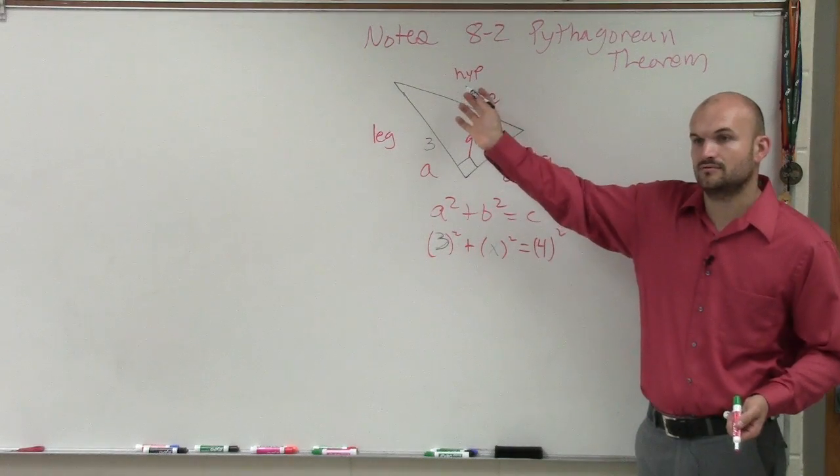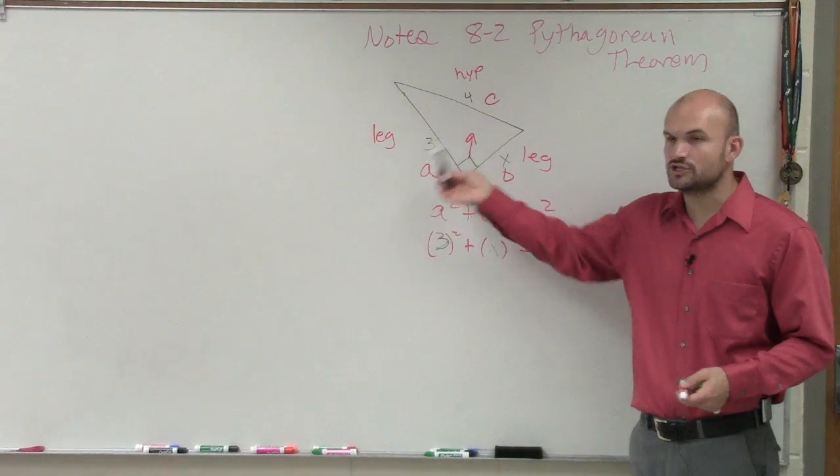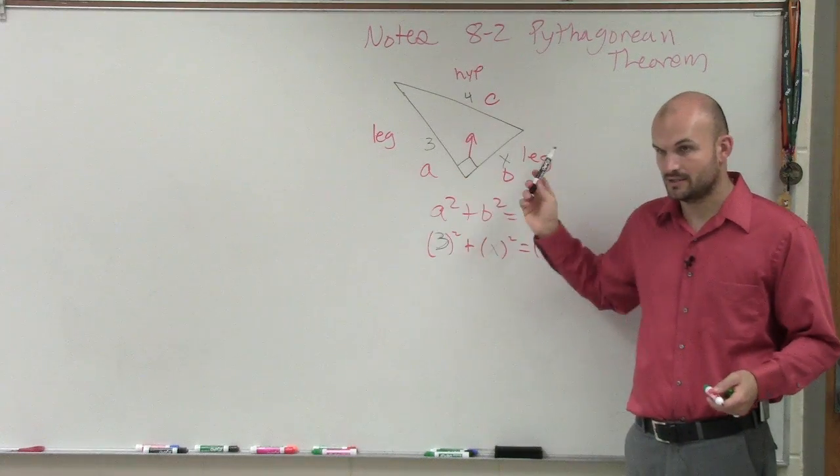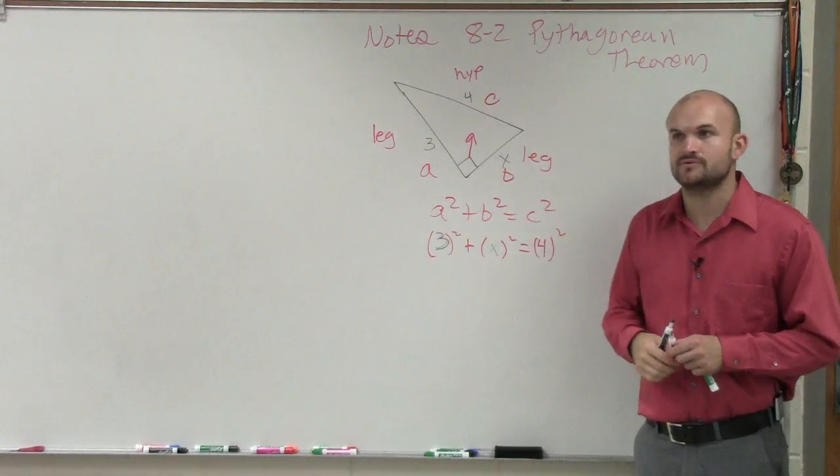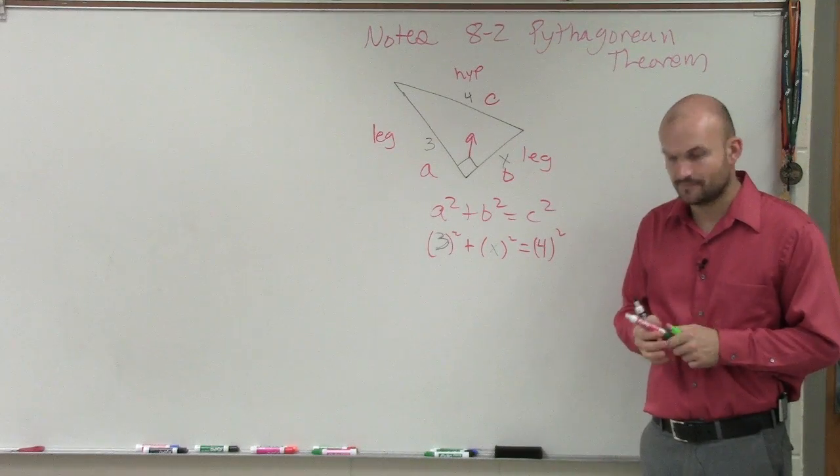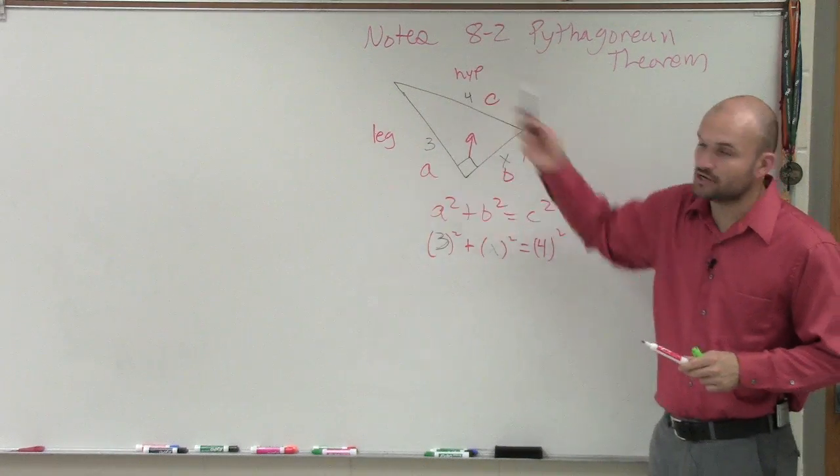That's your c, 4. Remember, because c is representing our hypotenuse. It's always our two legs squared add up to give us our hypotenuse squared. So these are your two legs. That's your hypotenuse.